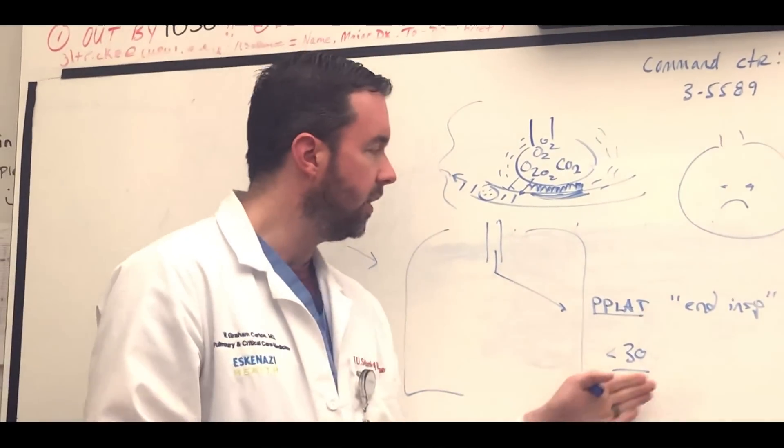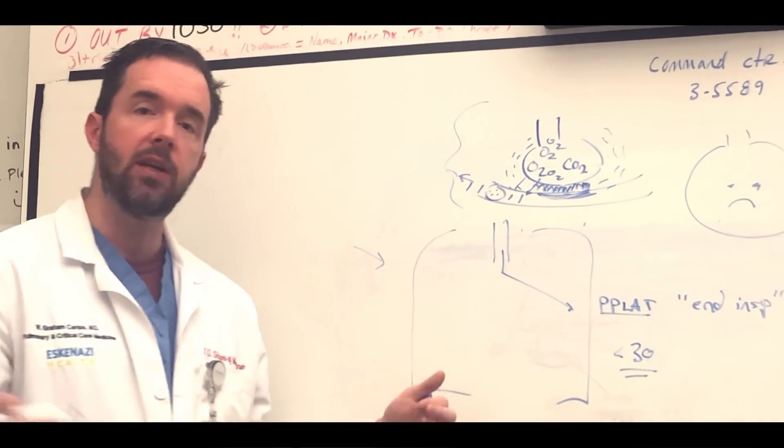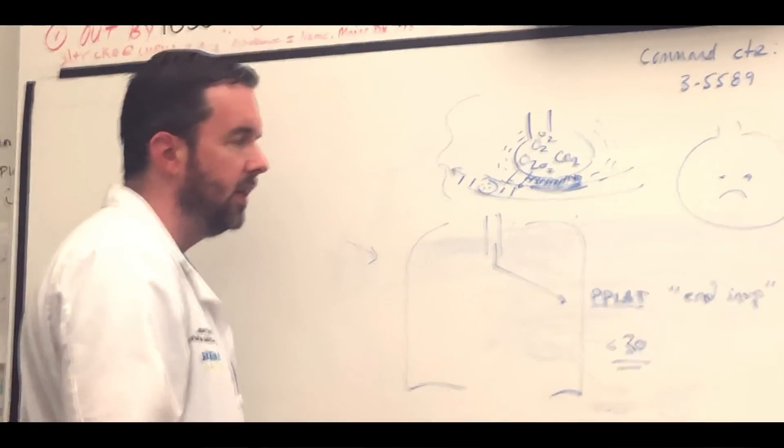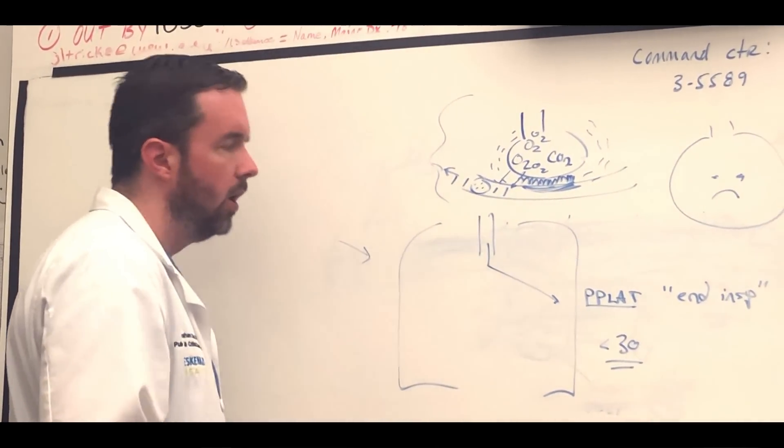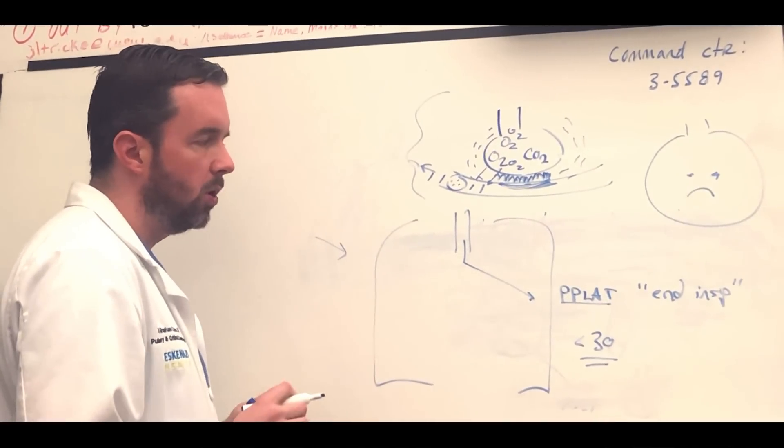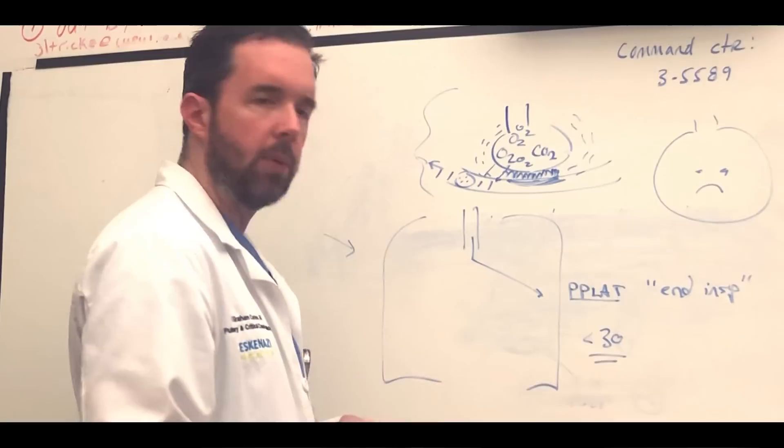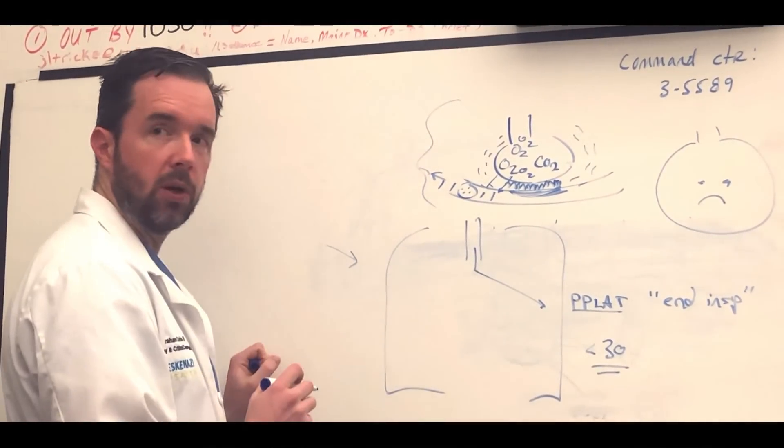There's some times when we allow P-plats to climb above 30. These include cases of morbid obesity, that kind of thing, where you have a counter pressure pushing back up on the thorax. But for the most part, one of the things we're looking for to know that we're safely ventilating patients is the P-plat, which is the end inspiratory pressure.